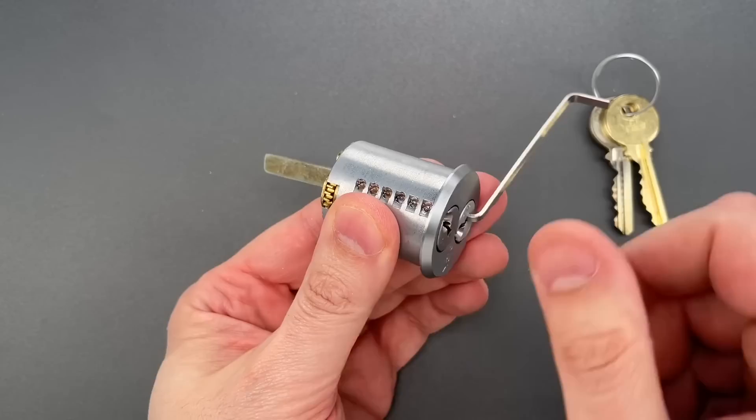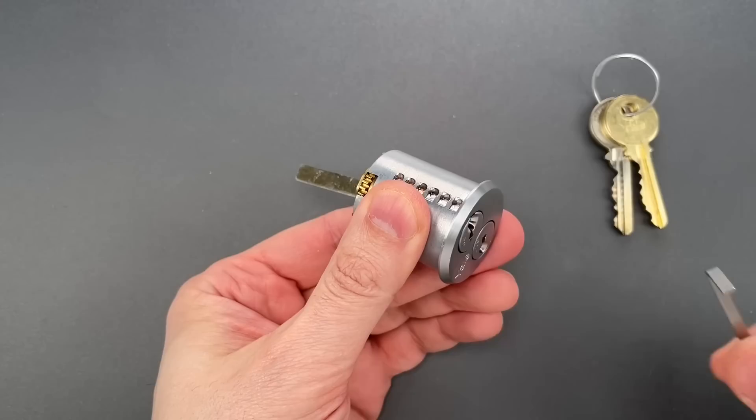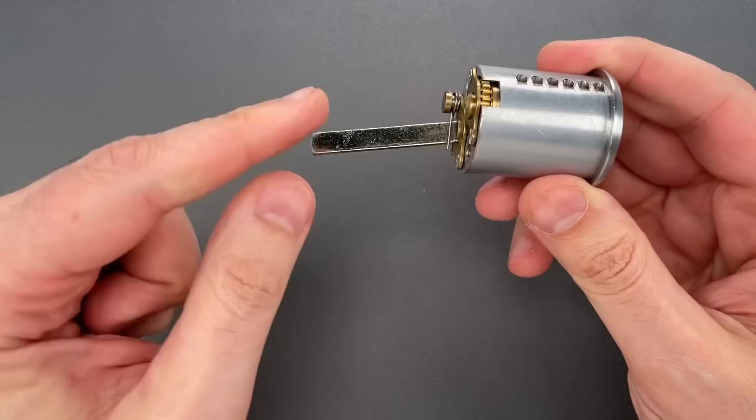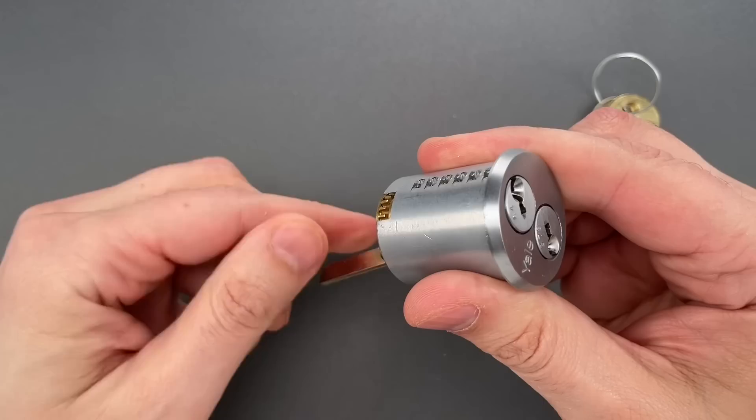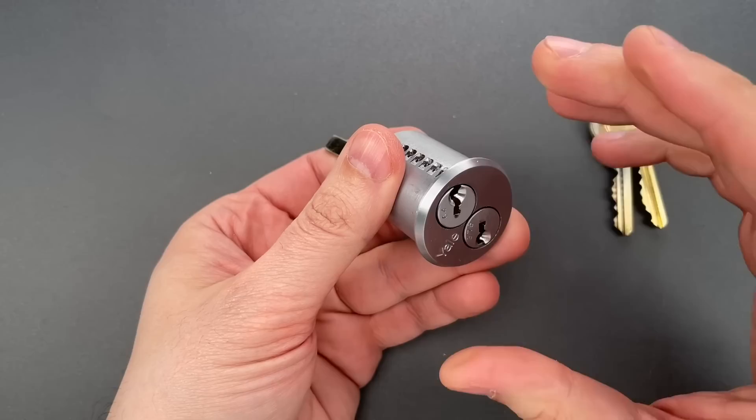Now, I'm turning the core, but note what is not turning, the tailpiece. You see, to make this so either core could open the lock, they had to decouple the tailpiece from both cores. You can see, I can actually turn the tailpiece without either of the cores moving.